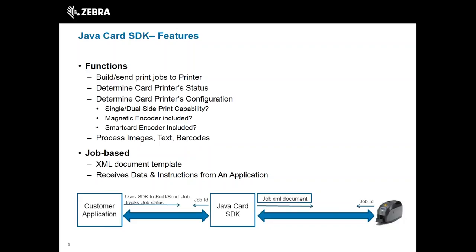The print job opens a connection to the printer, checks the printer status to make sure there are no issues, then builds the printable data — processing any images, text, barcodes, anything that will be on the card — sends it to the printer, tracks it, and then closes the connection. The basic use cases for the SDK are single or dual-side printing, magnetic encoding and reading, a combination of those two, and smart card.